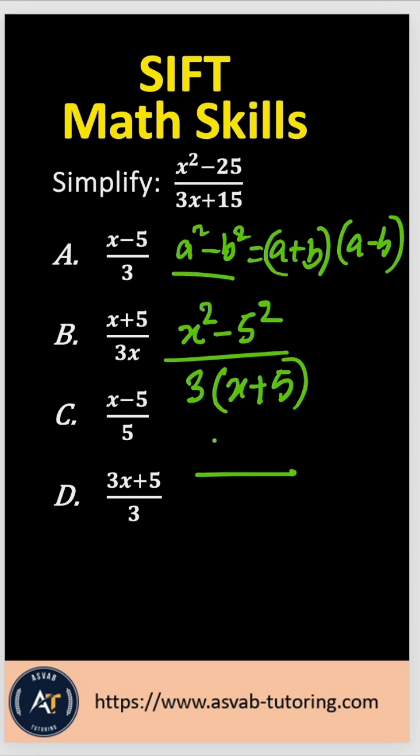So that gives you x plus 5 times x minus 5 over 3 times x plus 5.